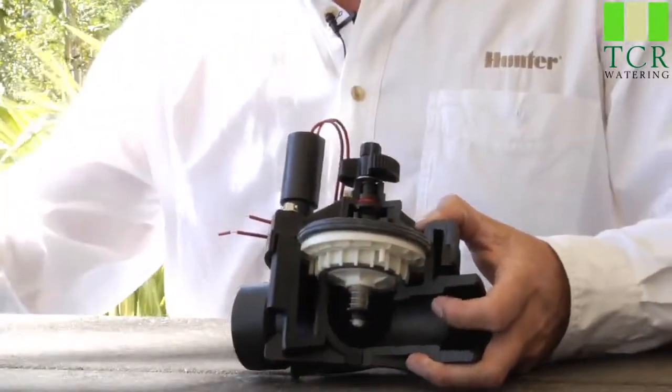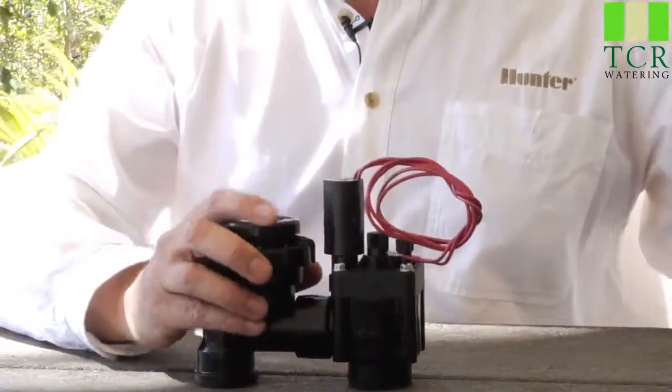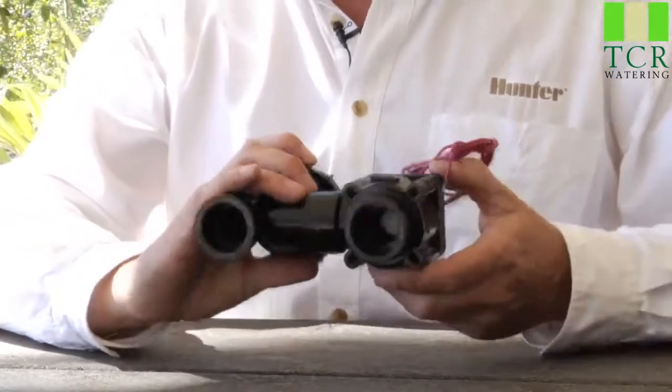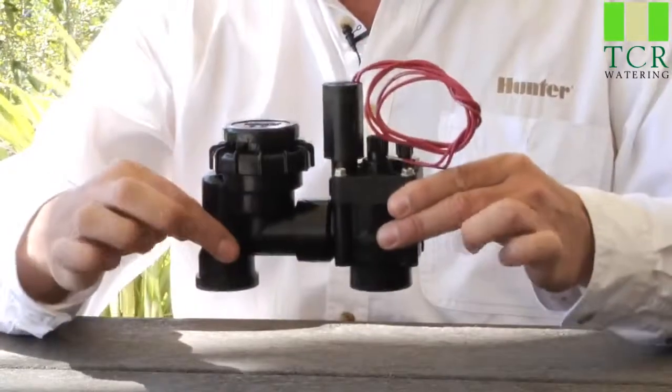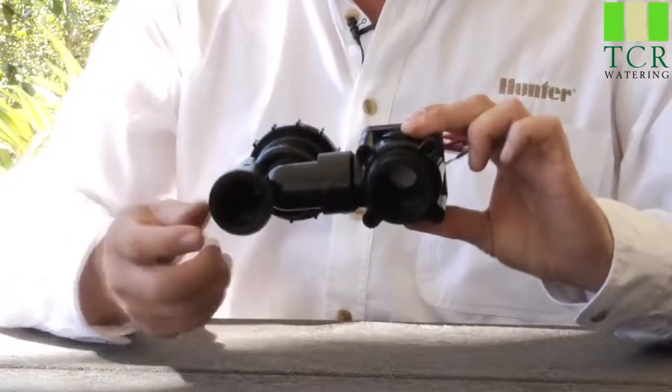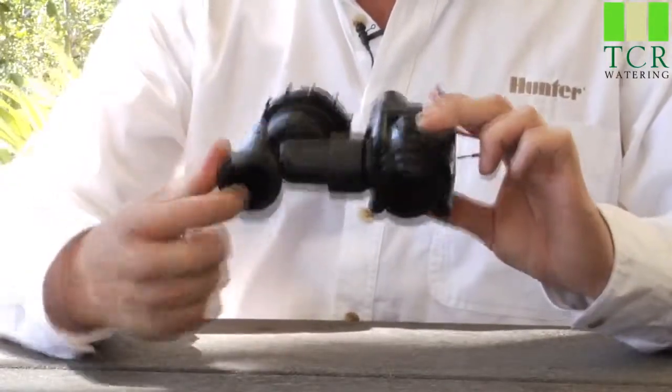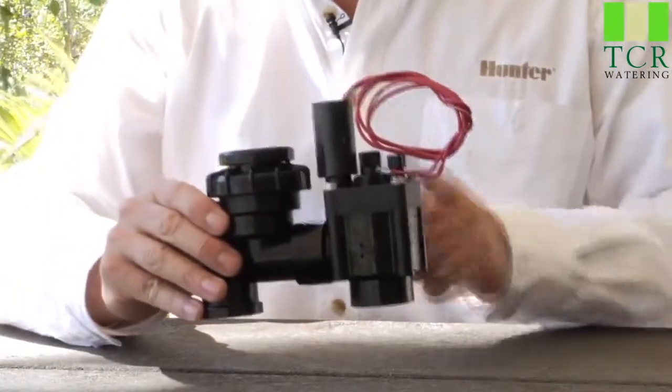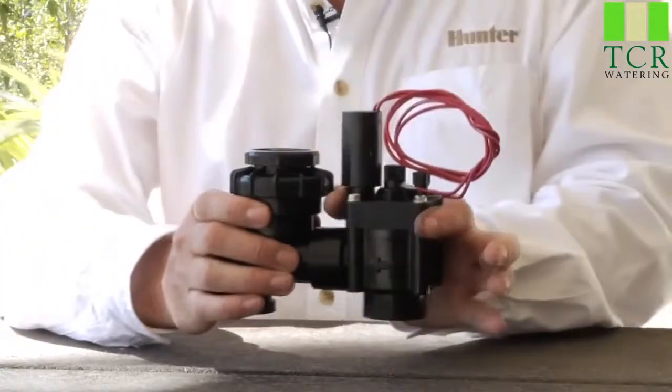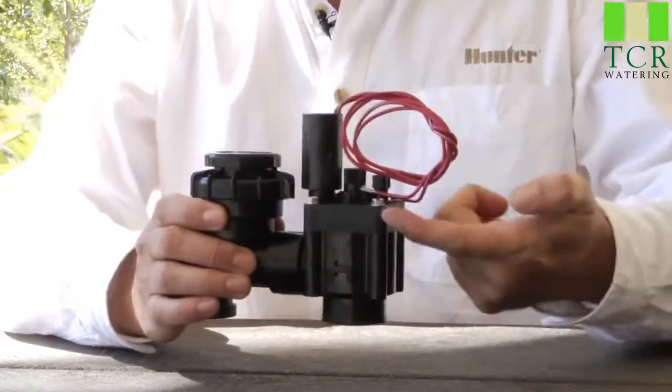You might also have something called the anti-siphon valve. This is not an inline valve that goes in a valve box, but it mounts above ground, usually about 16 inches off the grade. This happens to be a slip joint style, but it works off the same premise. The front half is the anti-siphon portion, and the back half has the body, the diaphragm in between,